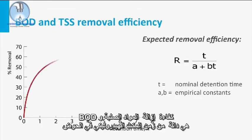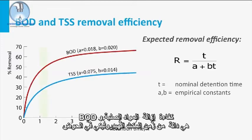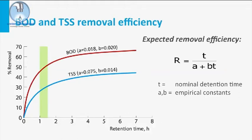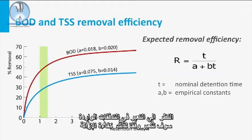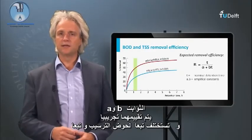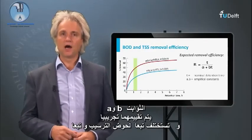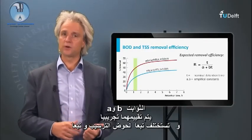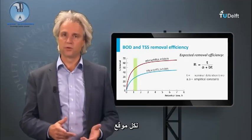The solids and BOD removal efficiency is a function of the applied hydraulic retention time in the tank. Considering the fluctuating incoming flows, removal efficiency will accordingly fluctuate when the duration of the peaks exceeds the design HRT. The shown constants A and B are empirically assessed and will differ per clarifier and per location.